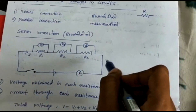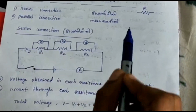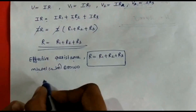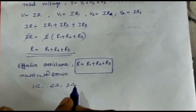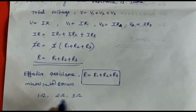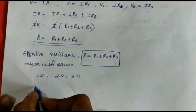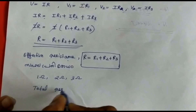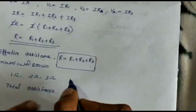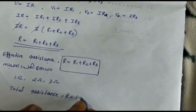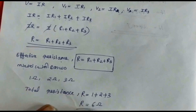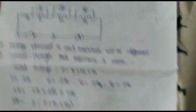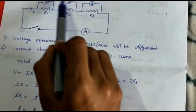Here we have three resistors connected in series with different values. R1 is 1 ohm, R2 is 2 ohm, R3 is 3 ohm. The total resistance is 1 plus 2 plus 3 equals 6 ohm.